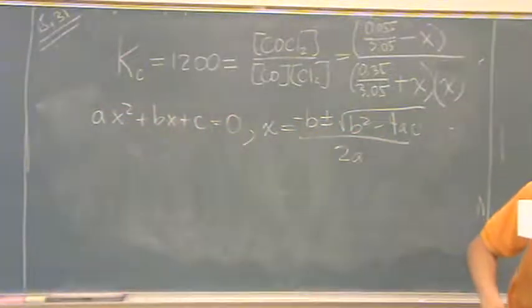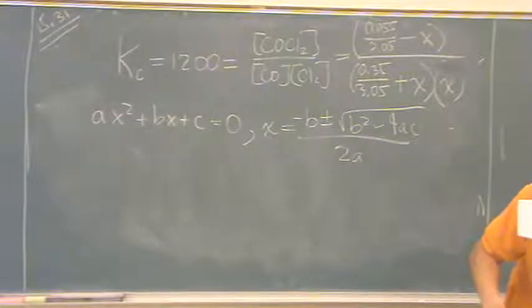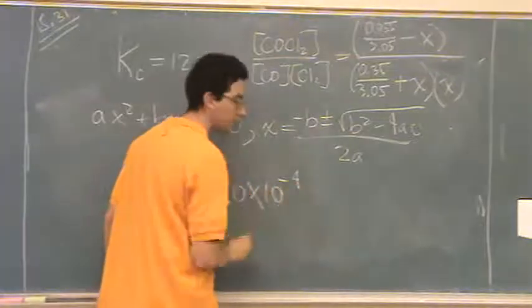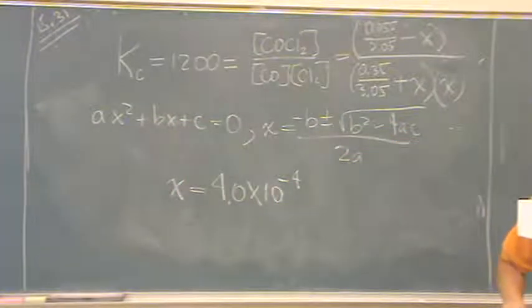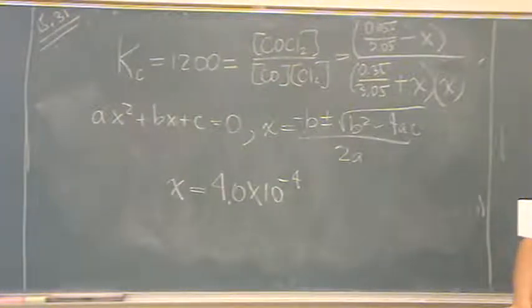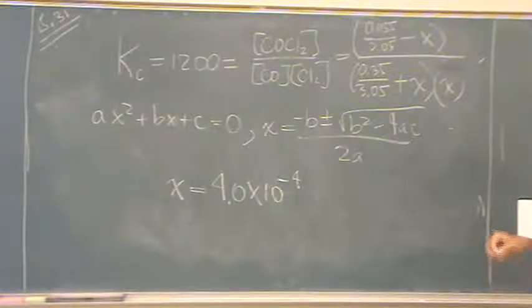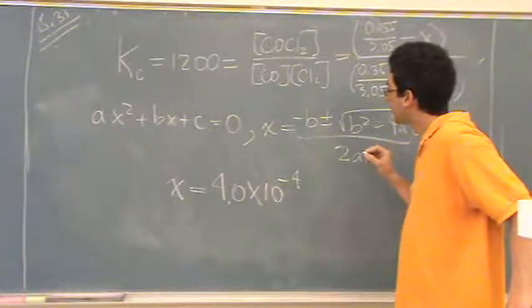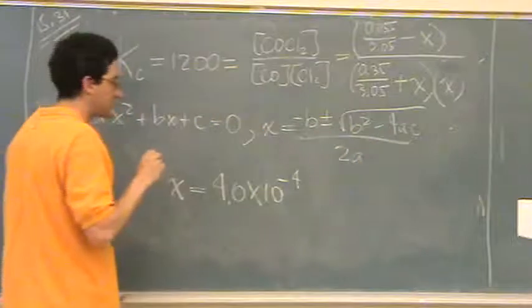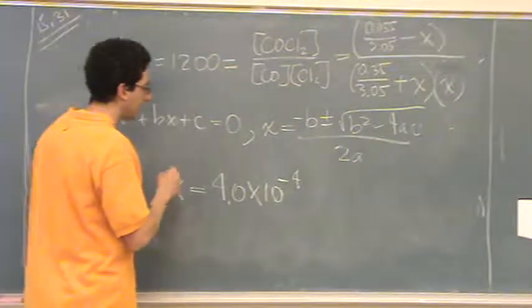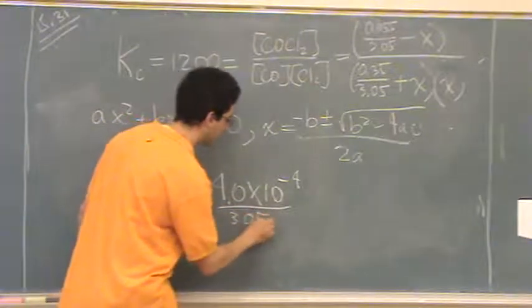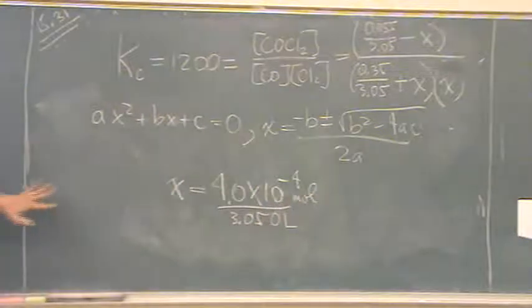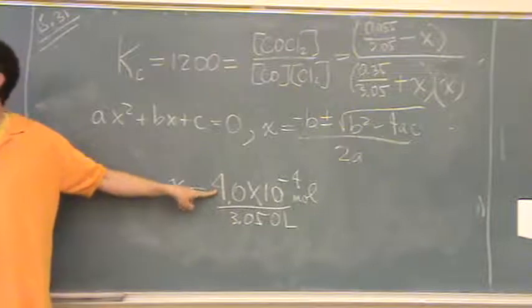So, when you solve for X, you will get 4 times 10 to the minus 4. Or, I'll have to make a slight change on that. This is X that, no. This is, you're actually going to get this number. The books all did it a slightly different way. You're going to get that number.